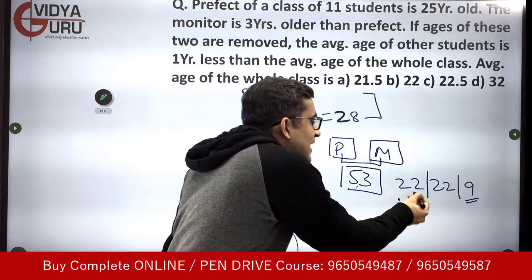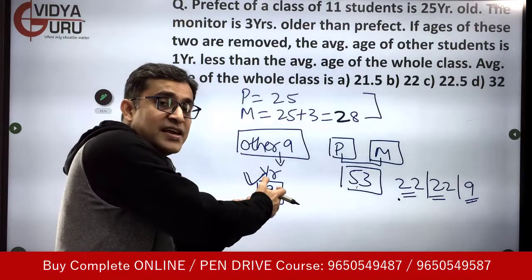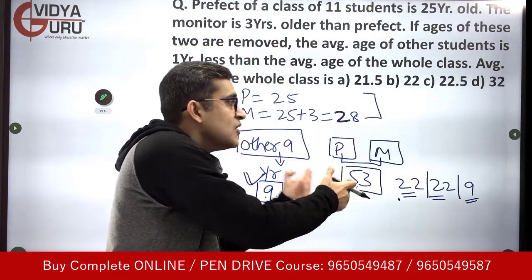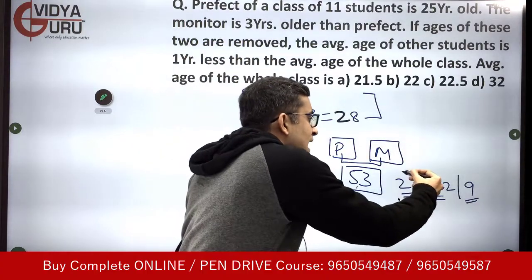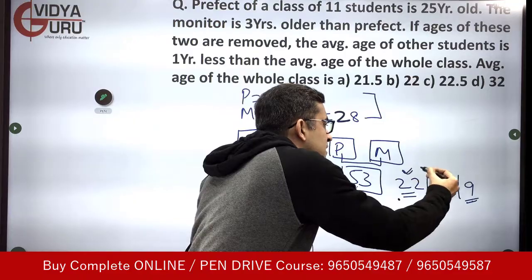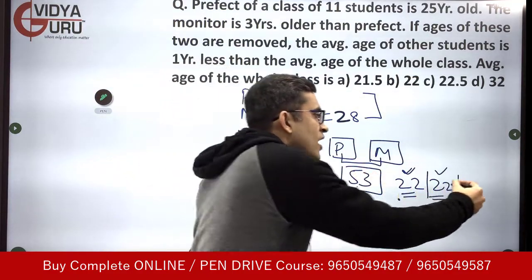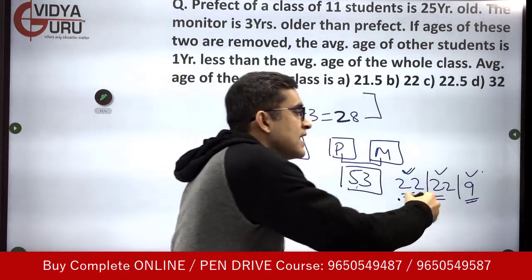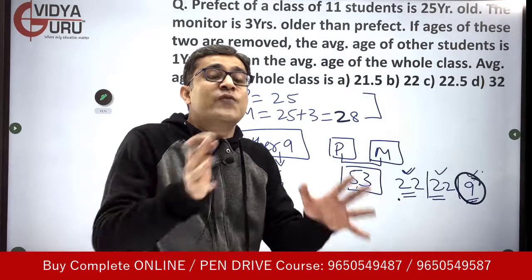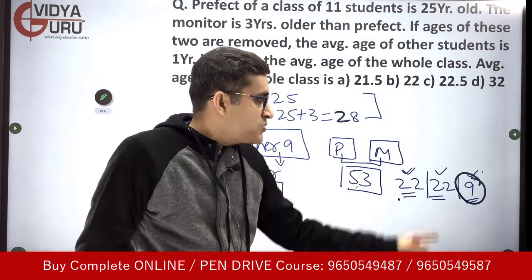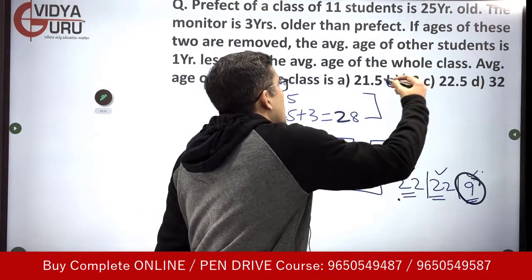The break-up of 53 is: the average for the prefect, the average for the monitor, and 9 extra years that went into increasing the average of the other 9. So 53 = 22 + 22 + 9, making the average 22. The answer is 22 years — option B.